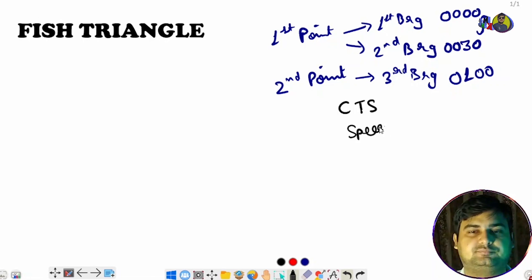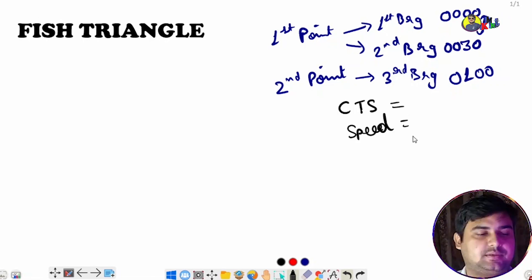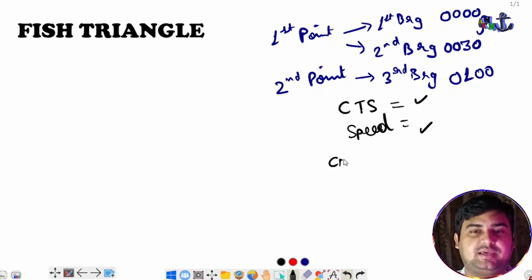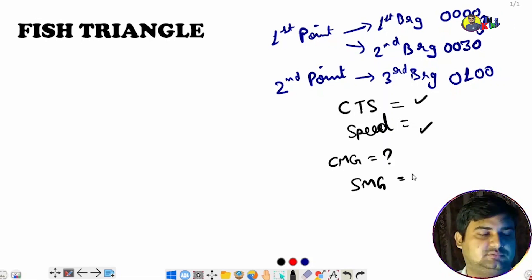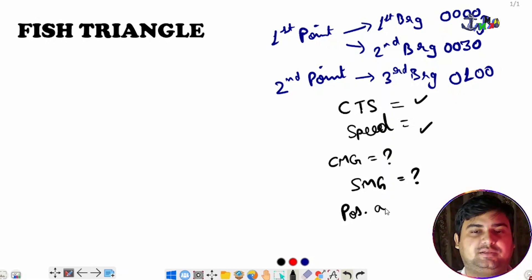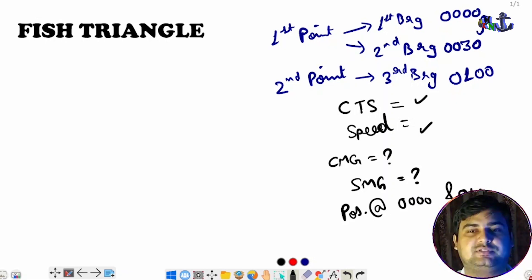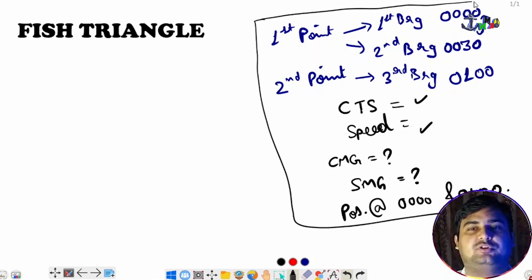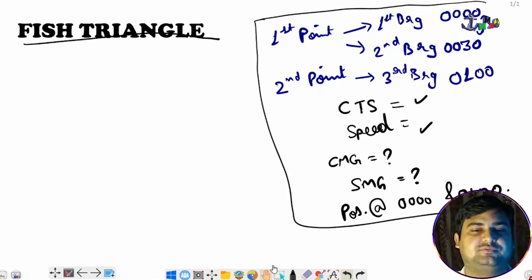You will also be given the speed. You have to find out the CMG (Course Made Good), the SMG (Speed Made Good), and the position at 0000 and 0100 hours. This is the overview of the problem, which needs to be solved by the method called the fish triangle.